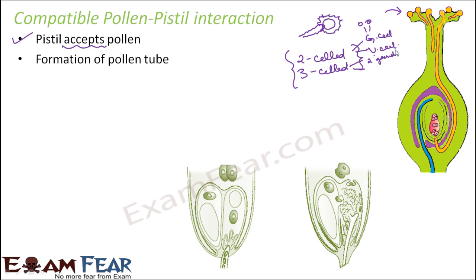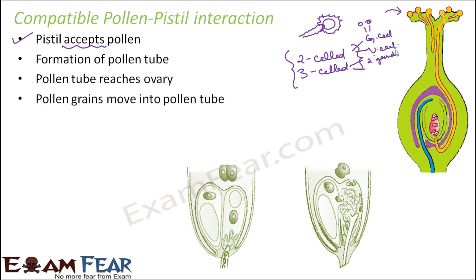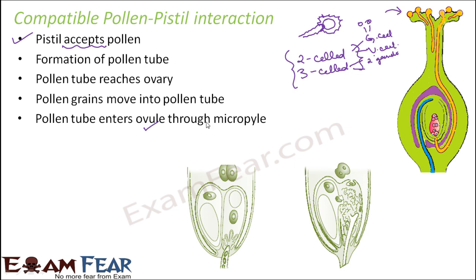If the pollen grains are produced in the three-cell stage, they carry two gametes from the very beginning — one vegetative cell with two gametes inside it. Irrespective of whether they are produced in the two-cell or three-cell stage, the pollen grains move into the pollen tube. The pollen tube then enters the ovary, and since the female gamete is located in the embryo sac inside the ovule, the pollen tube enters the ovule through the micropylar end.